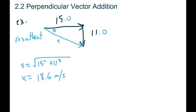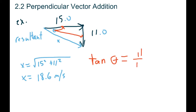We also have to find the angle. You can see the opposite side is 11 and the adjacent side is 15, and we just calculated the hypotenuse. Technically we could use any of sine, cos, or tan, but it's better not to use your calculated answer in case you made a mistake. So we'd pick tan - tan of the angle equals opposite over adjacent.